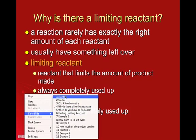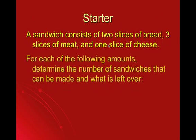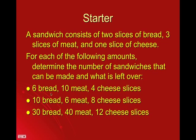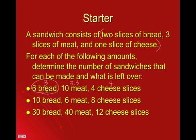Coming back to our starter slide with all of our sandwich stuff, for each of these situations, we're going to figure out how many sandwiches you can make and what is left over. If each sandwich consists of a fixed formula — no exceptions — then in this first situation, all you have to do is look at each ingredient, figure out how many sandwiches you can make, and choose whichever is lowest. For the six slices of bread, ten meat, and four cheese: six bread gives three sandwiches, ten meat gives three and a third sandwiches, four cheese gives four sandwiches. So, the six slices of bread is the limiting ingredient, and we'll have one slice of meat and one slice of cheese left over.